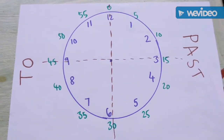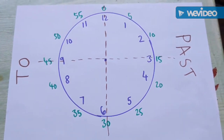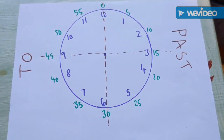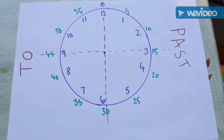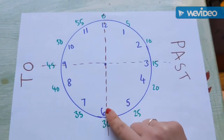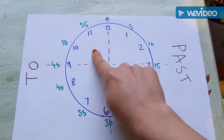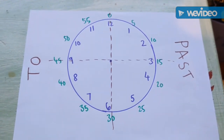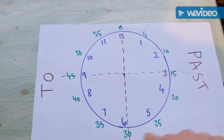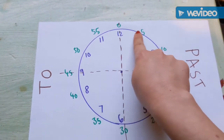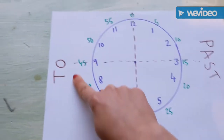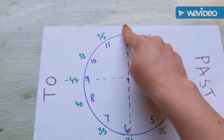Now we're going to think about quarter past and quarter to. What I've done is divided a clock face into quarters. Let's think back to our fractions - a quarter is when you split your whole, this is our whole clock face, into four equal parts. So we've got four equal parts. You might notice that a quarter of 60 minutes is 15; two quarters is 30; three quarters is 45; and four quarters - the whole - would be 60 minutes.